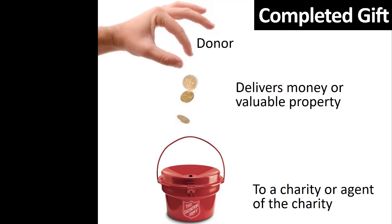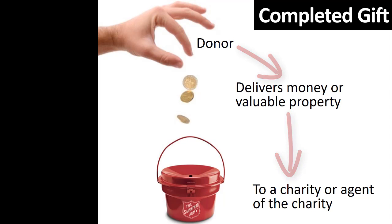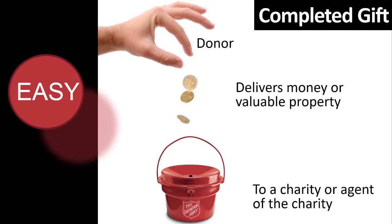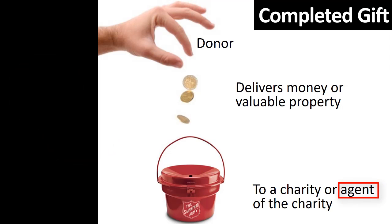A deductible charitable gift occurs when the donor delivers money or valuable property to a charity or agent of the charity. That's it. There is nothing particularly complicated about the definition, except perhaps the phrase 'agent of the charity,' which simply means a representative of the charity. How then could things possibly become complicated when starting with such a simple definition?